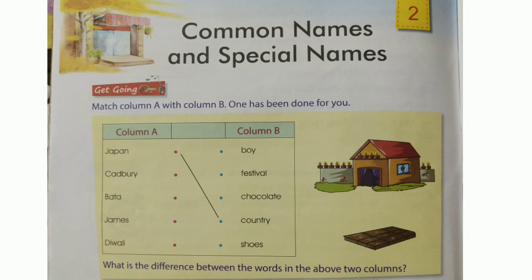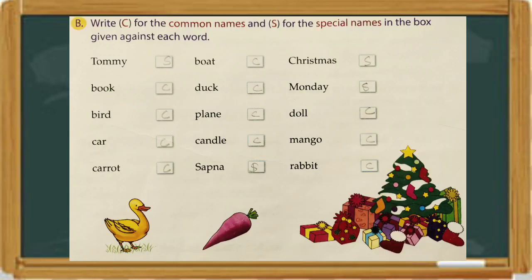Now, here you have to write C for the common names and S for the special names in the box given against each word. The first is Tommy — Tommy is a special name of a dog. Tommy starts with a capital letter, so you have to write S. Special names always begin with a capital letter.